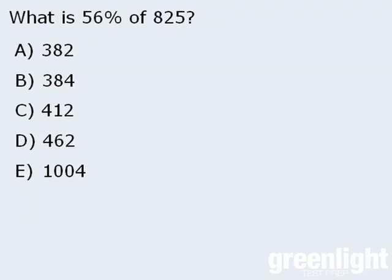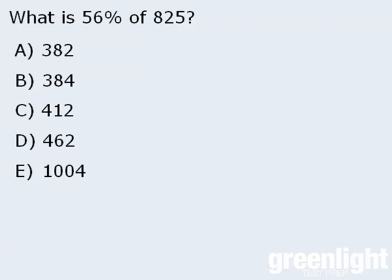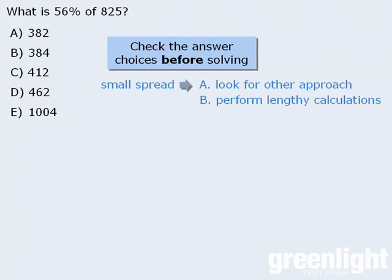In school, you learned that to find 56% of 825, you can either multiply 0.56 by 825, or you can multiply 56 one-hundredths by 825. Now both of these approaches still require somewhat lengthy calculations, so there probably exists an easier and faster approach. Can we estimate here? Before we can estimate, we must first check the answer choices. Since the first four answer choices are so close together, we really can't estimate. So we must either find a different approach or perform the calculations we looked at earlier.